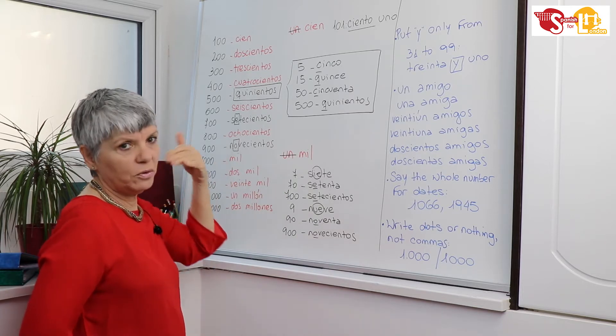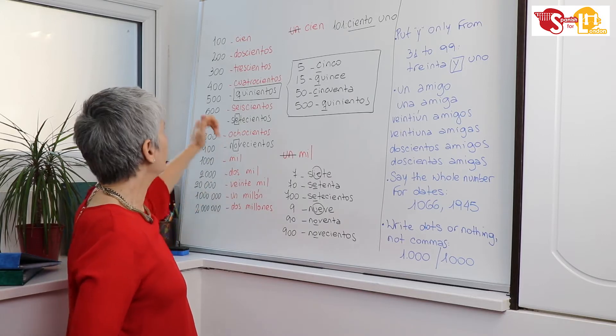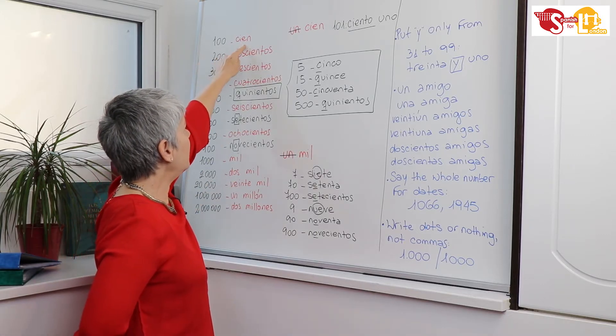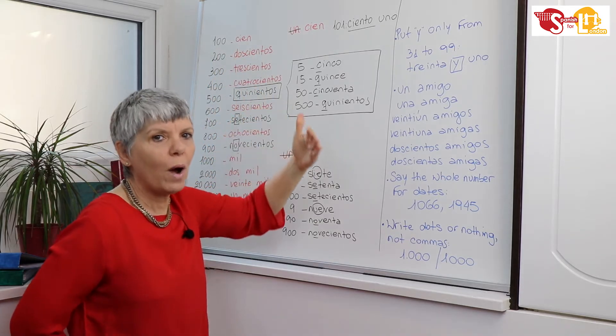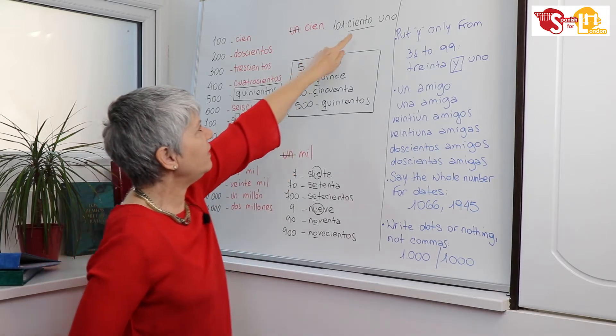Then, of course, if you want to say 2000, you say dos mil, 3000 tres mil, etc. Okay, now when we say 100, we say cien.